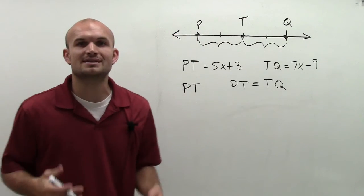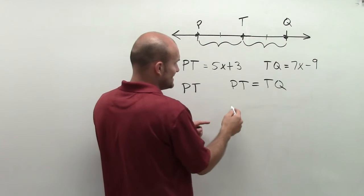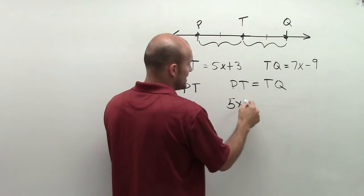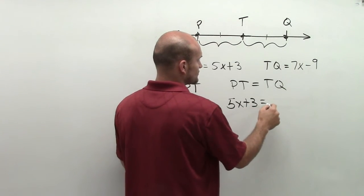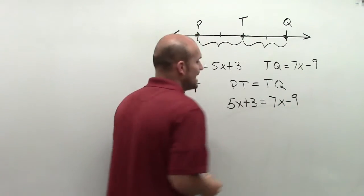I can say, alright, so what does PT and TQ, how are they represented? PT is represented as 5x plus 3, and TQ is represented as 7x minus 9.